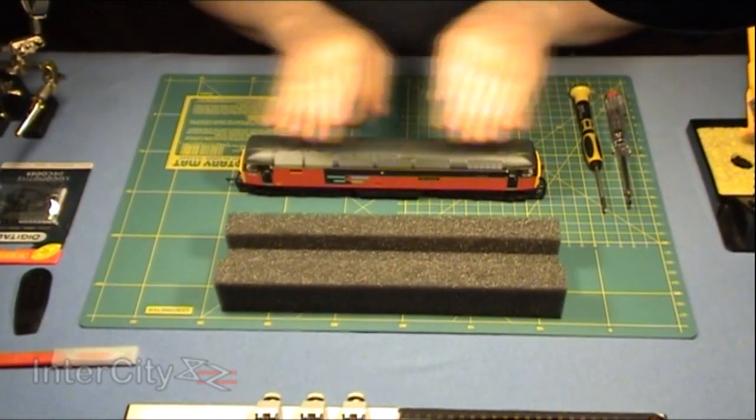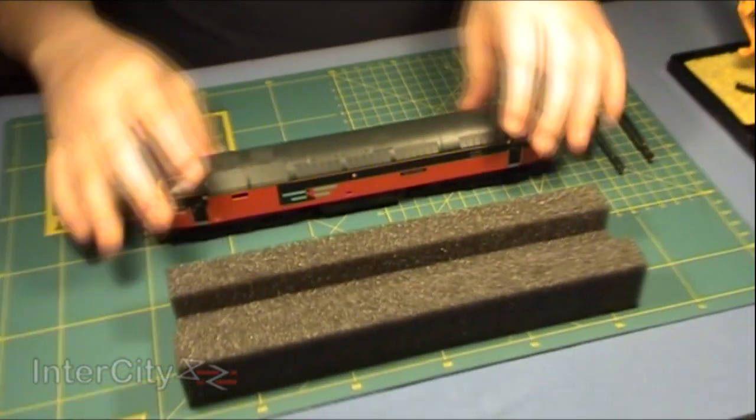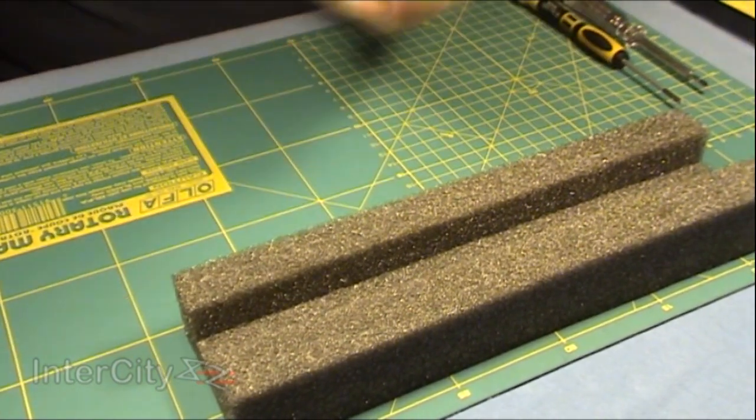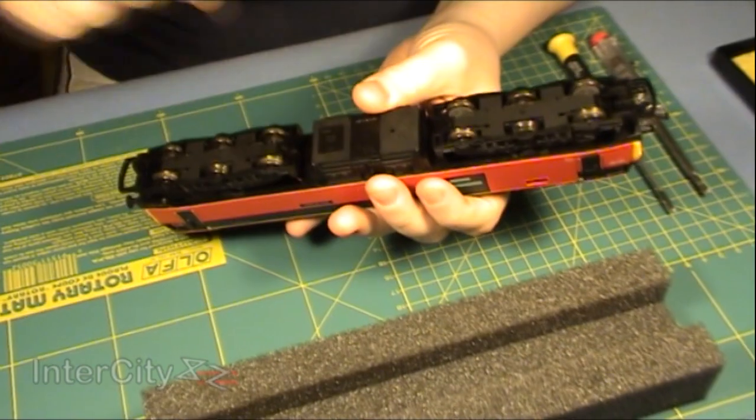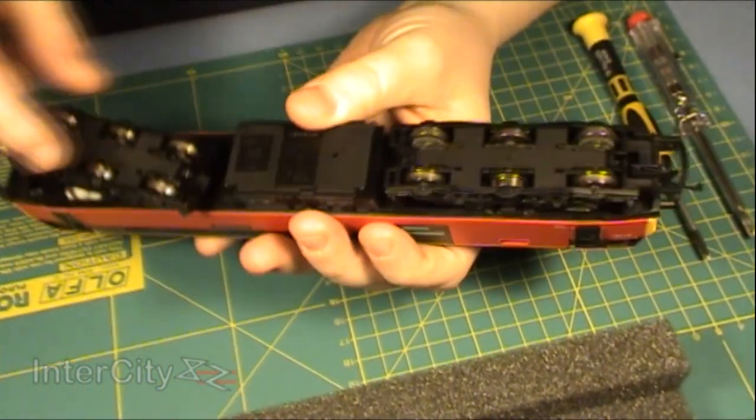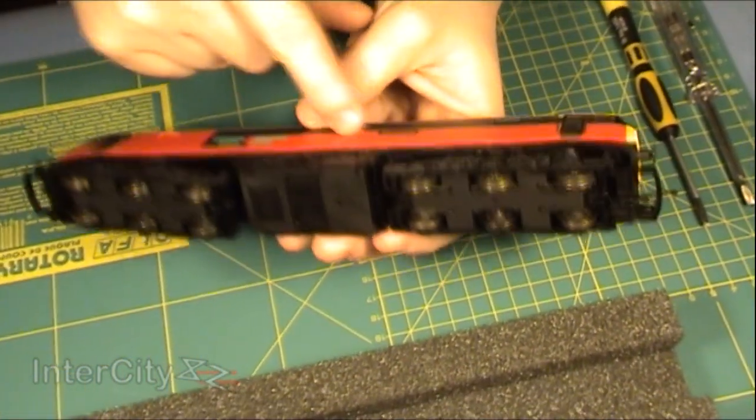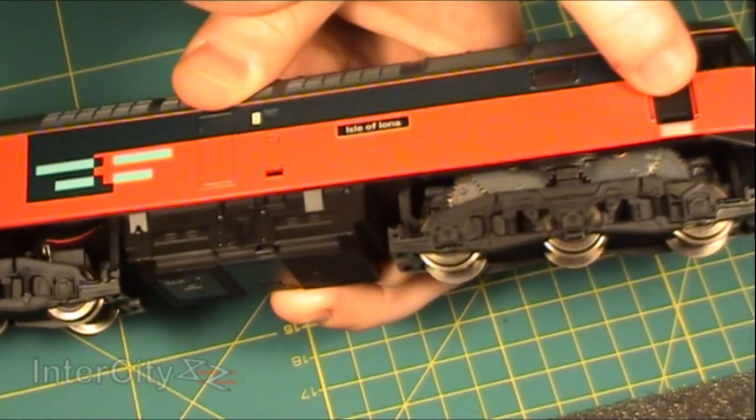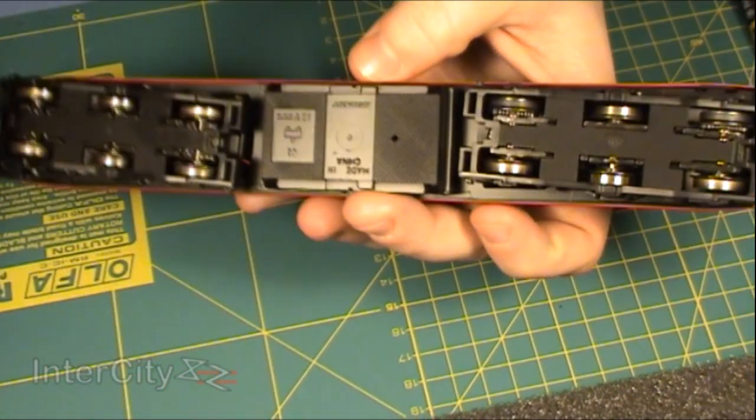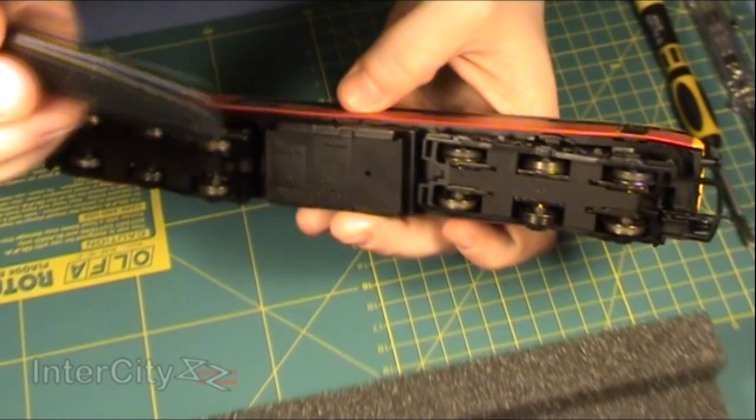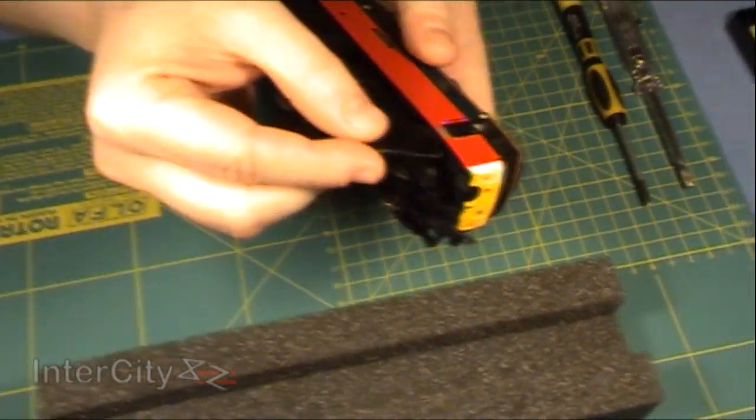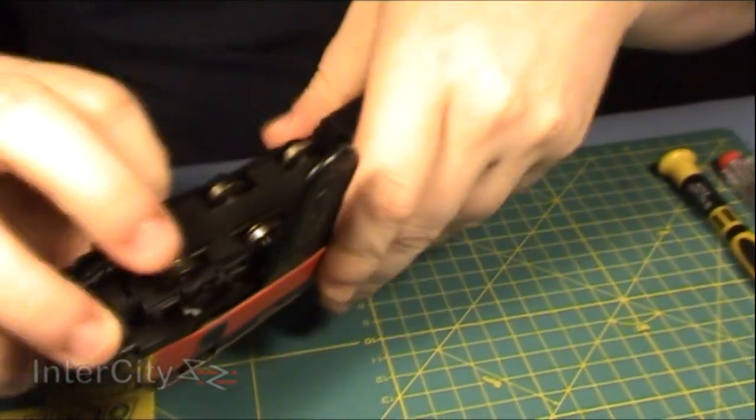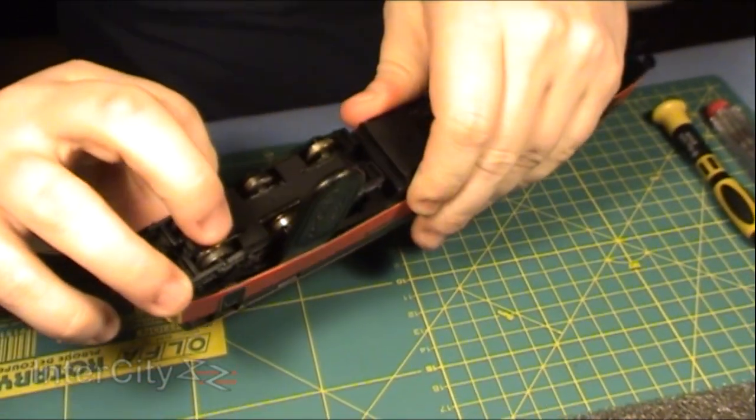The first thing we need to do is get the body off so we can see how she's wired up as a DC loco. If we turn her over, we can see straight away there are no screws holding this one together, but there are little plastic hooks or nodules holding it in place. We need to prise the body apart. This is where the gap opener comes in—I can slide it in the edge and use my nail on the other side to pull the body away.